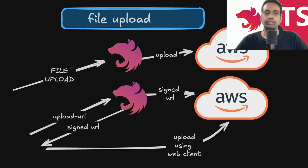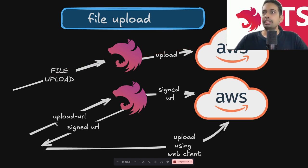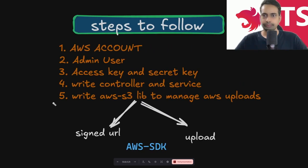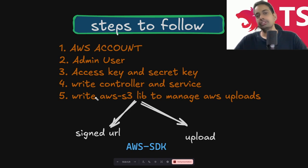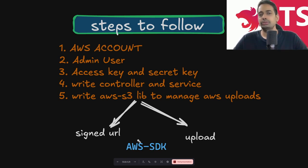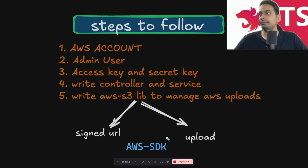Let's start our file upload journey. First we'll write a controller where we can upload a file, and the file as a stream buffer will be uploaded to the AWS S3 bucket. Prerequisites: you need an AWS account, an administrator user, and you need to download the access key and secret key. Configure them in process.env for Node.js. Then write a controller and service that uses the AWS SDK — the library for Node.js that lets you interact with any AWS component.